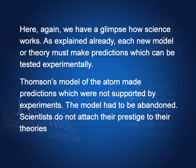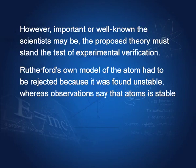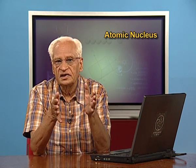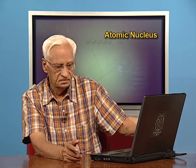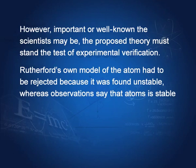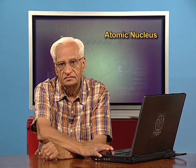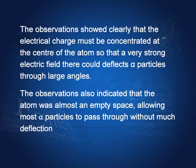The important thing is that scientists do not attach their prestige to their theories. However important or well known the scientist may be, the proposed theory must stand the test of experimental verification. If experimental verification fails, then the theory is rejected, however important that scientist may be. Rutherford, during that time, was an extremely important and well-known scientist, and his own model of the atom had to be rejected because it was found unstable, whereas observations say that the atom is stable. The observations showed clearly that the electrical charge must be concentrated at the center of the atom, so that a very strong electric field there could deflect alpha rays by large angles.